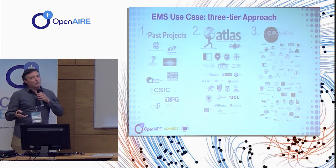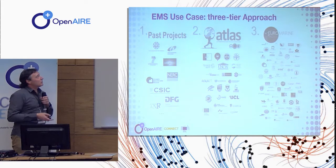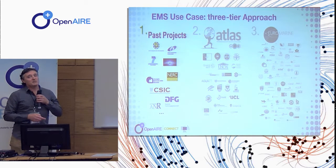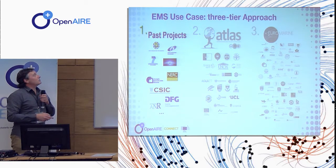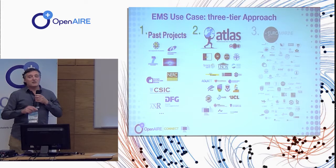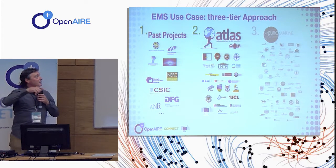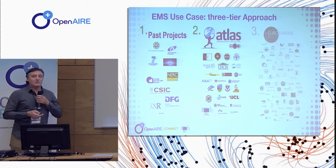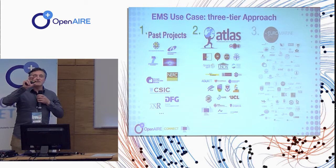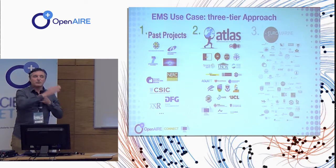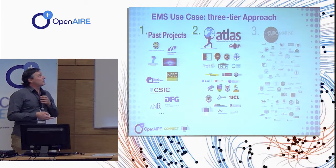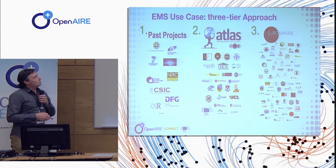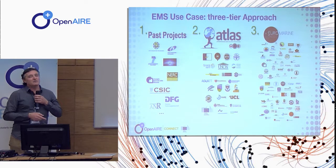In OpenAIRE Connect for marine science, we decided to use a three-tier approach to aggregate content. The first is to look at past projects — aggregating content from EU-funded and national agency-funded projects. The second approach is to take a single project; in this case a Horizon 2020 project called ATLAS, a medium-sized project with 25 partners. OpenAIRE Connect is embedded in the description of work of that project, used actively from start to end to demonstrate how it improves these aspects.